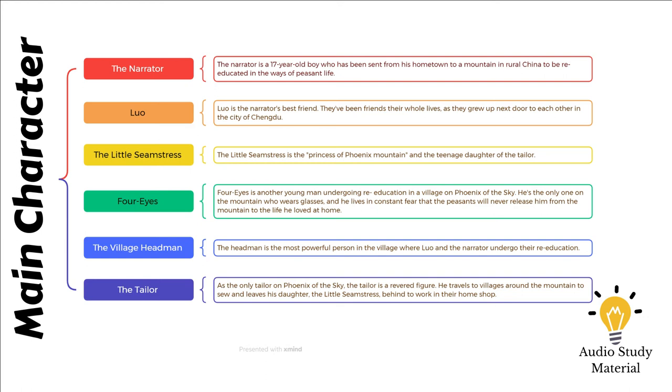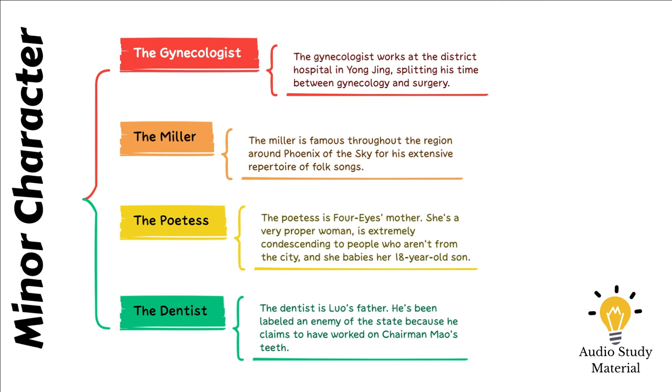The following day, Little Seamstress informs the narrator that she is pregnant. The narrator says that it is unlawful to be an unwed mother, to get an abortion, and to marry before the age of 25. The narrator travels to Yongjing to seek assistance from the hospital's gynecology department. The female patients yell at the narrator, and he spends two days attempting to get an abortion without success. On the third day, he decides to seek assistance from the street-sweeping Christian preacher.